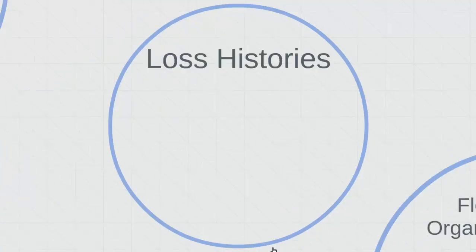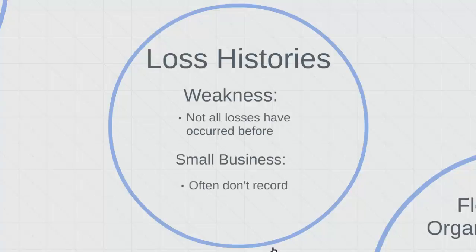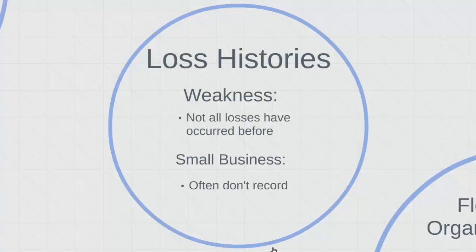When many people think about risk management, they think looking at an organization's loss history is most useful. But there are many weaknesses in looking at loss histories. For one, not all losses that could occur have occurred before. Many times, losses have resulted in a near miss or minor accident that is never recorded within the organization. But a slip and fall that results in a bruise today could result in a severe injury tomorrow. And for a small business, often businesses don't record smaller accidents or even sometimes larger ones. Now let's look at some identification tools that don't involve document analysis.